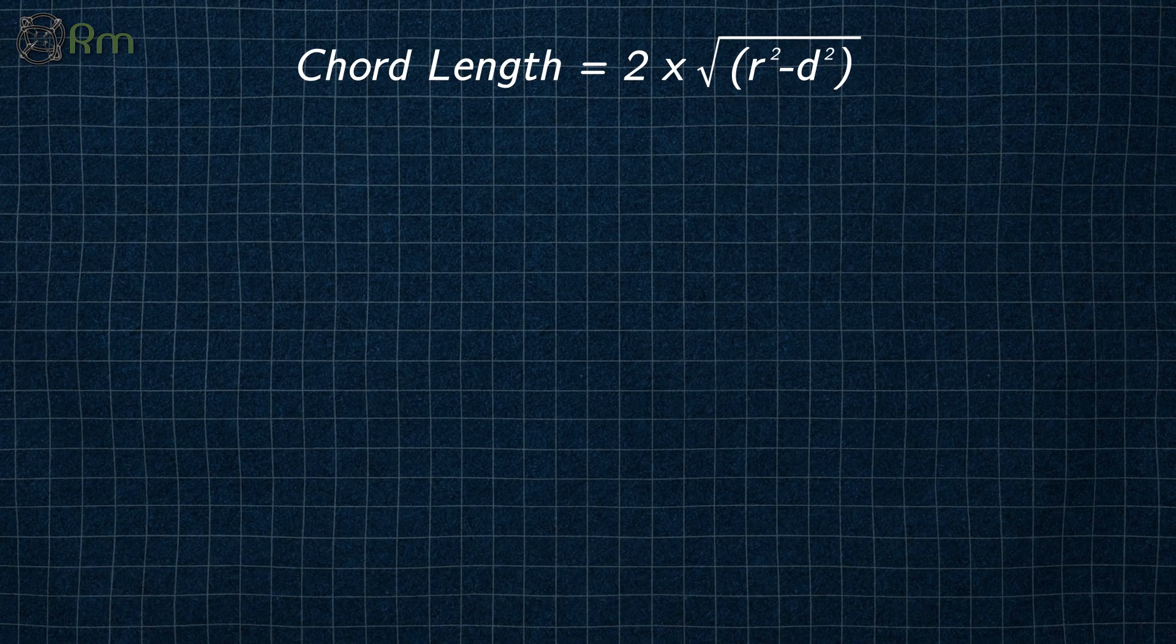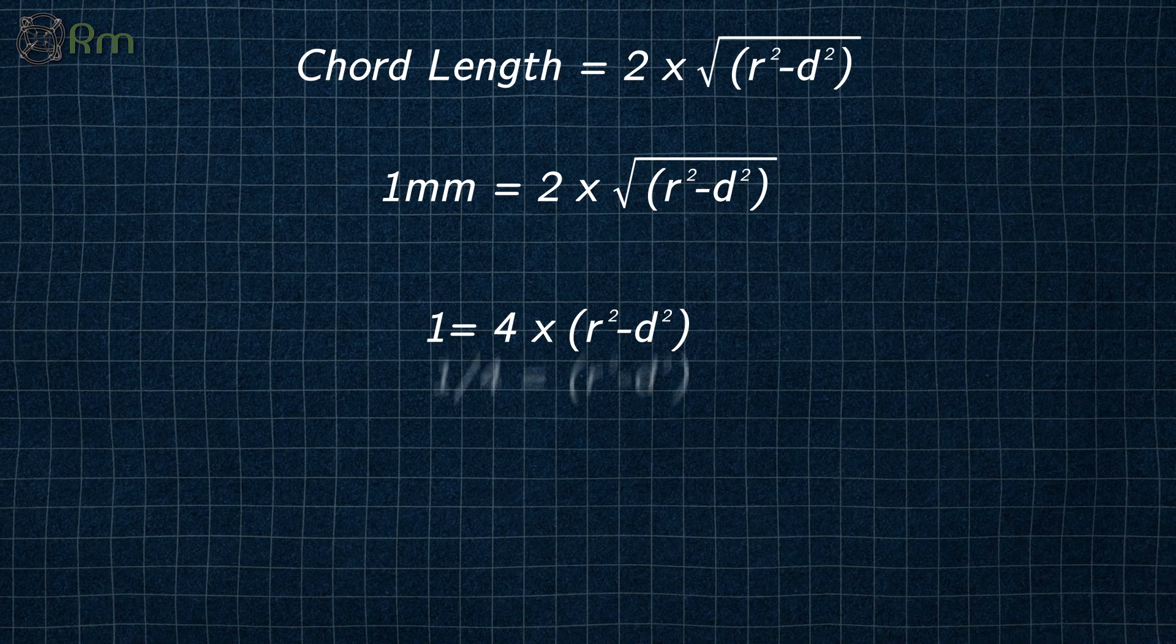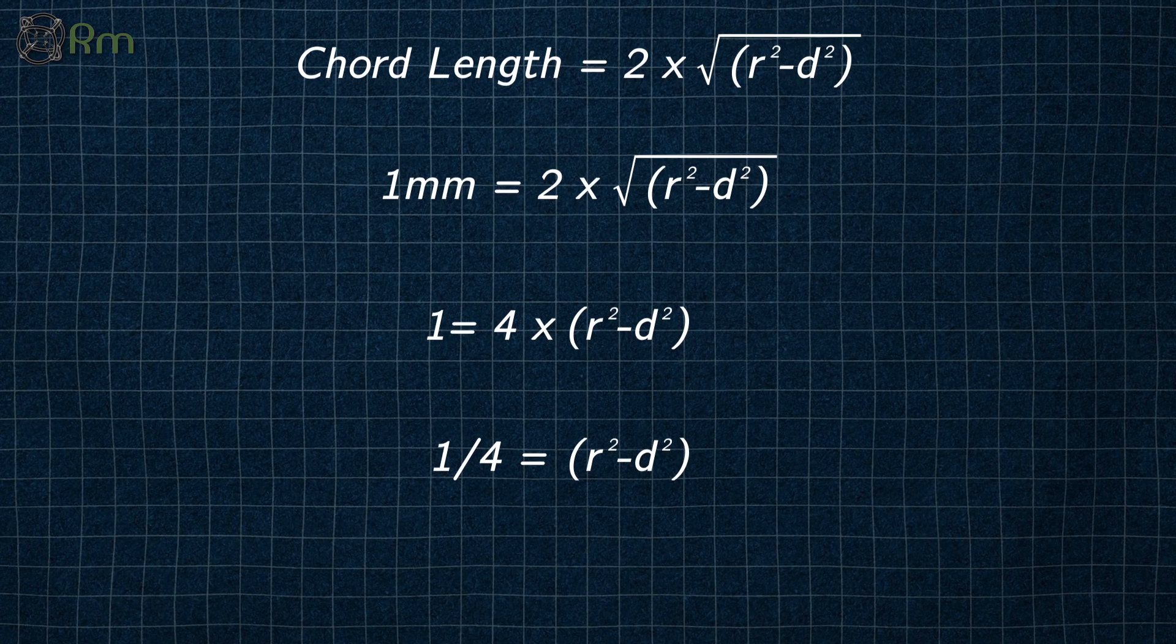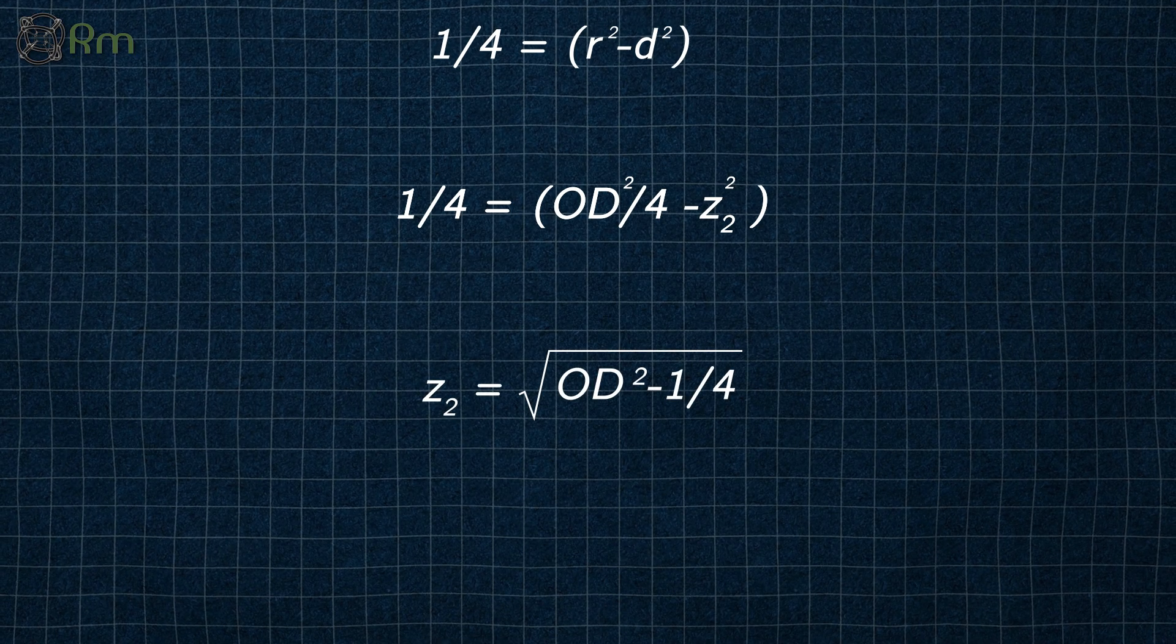Limiting chord length to 1 millimeter. Squaring both sides. Rearranging the equation. Writing R as OD by 2 and D as Z2. After rearranging, we get this.